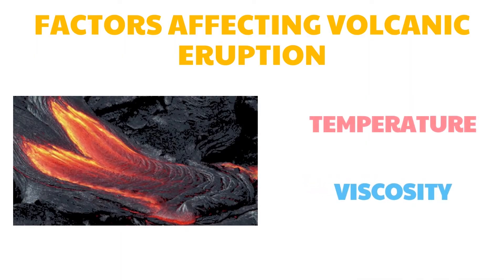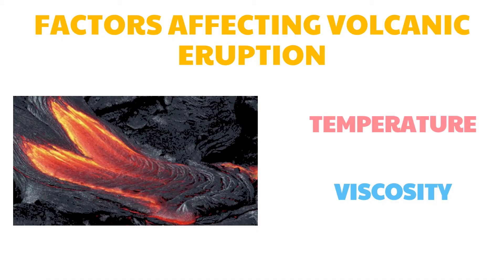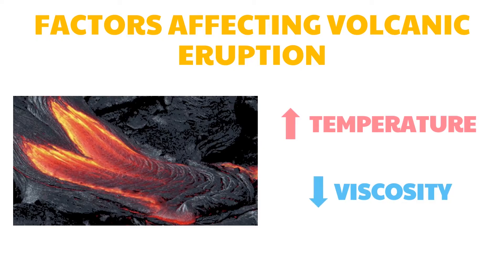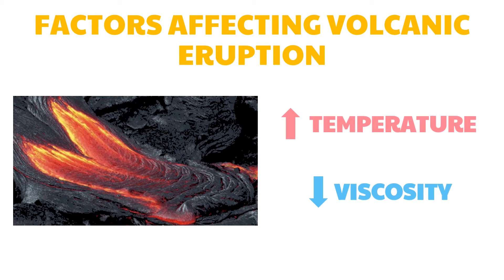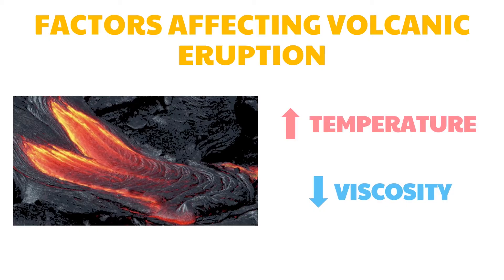First, let's look at how the temperature of magma affects its viscosity. The viscosity of magma decreases with temperature — the higher the temperature of magma, the lower is its viscosity. As lava flows, it cools and begins to harden, its ability to flow decreases, and eventually it stops.